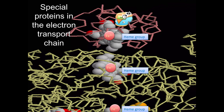Watch what happens when NADH arrives at the first protein in the electron transport chain. It drops off a very excited electron. The electron moves through the chain of proteins, jumping from one iron ion to the next. As it moves along, it releases energy. The second electron is dropped off and does the same. NAD then moves off into the matrix so it can be loaded with new electrons.